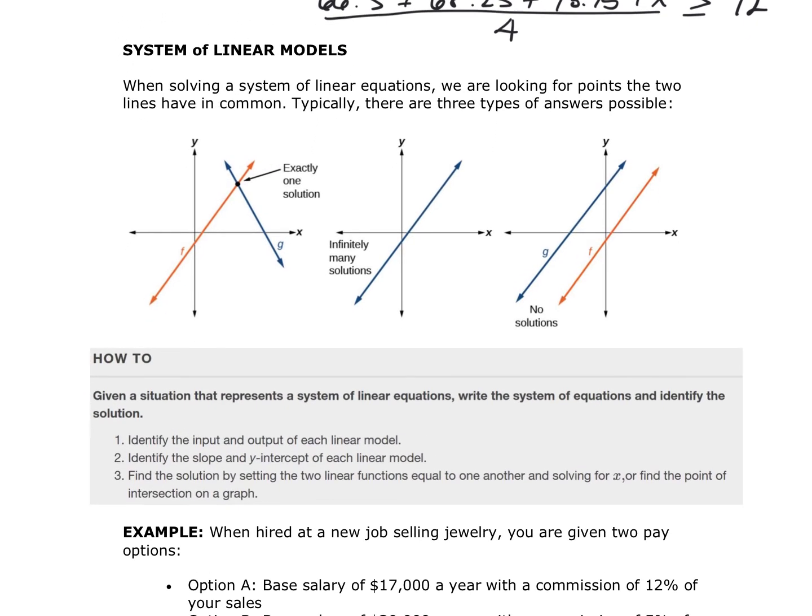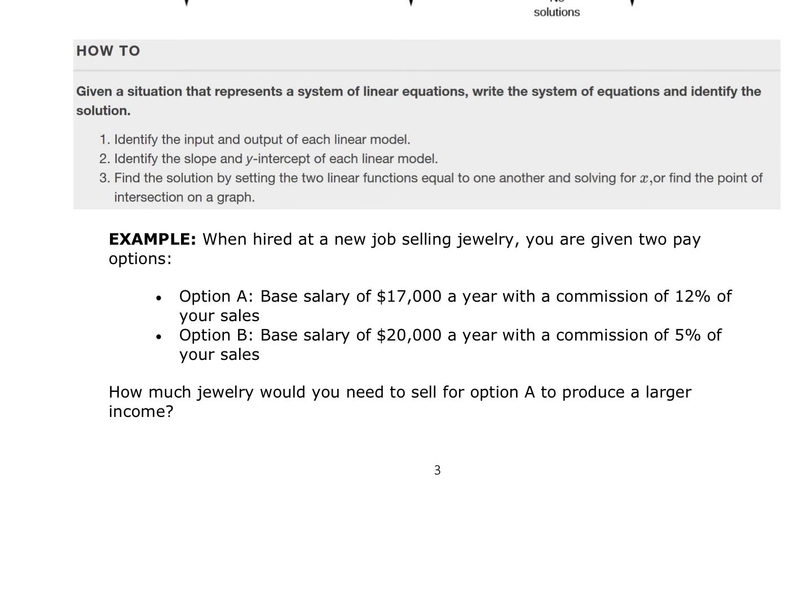When you're solving systems of linear models, these are your three choices. We can have exactly one solution. We can have an infinite number of solutions or we can have no solutions. So if we are looking to write a system of equations and identify the solutions, the first thing you want to do is figure out what is the input, what is the output. You also want to determine the slope and y-intercepts of each model and then find the solutions by setting one equal to the other or doing it by elimination. So substitution or elimination.